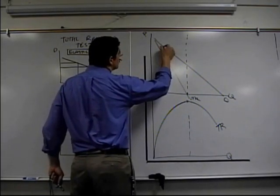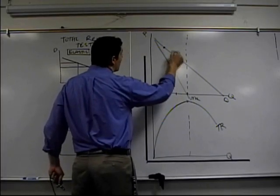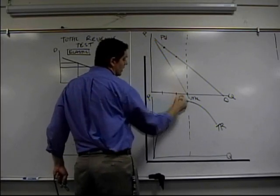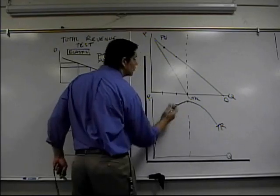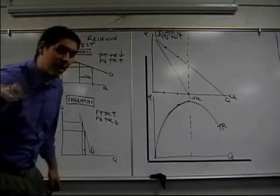For these units produced, from that unit to that unit, the price is going down. If the price is going down, at the same time, total revenue is going up. This is the elastic range of the demand curve.